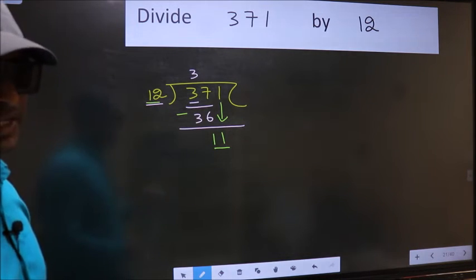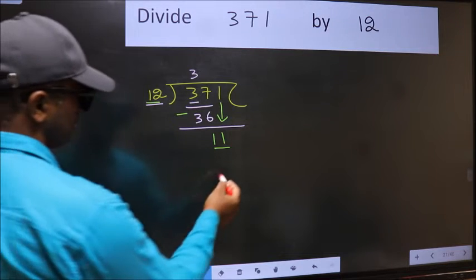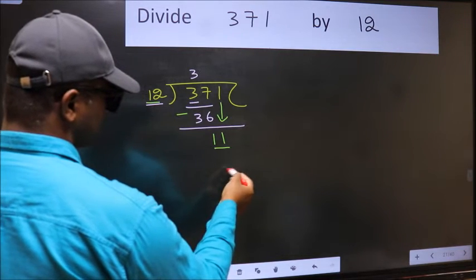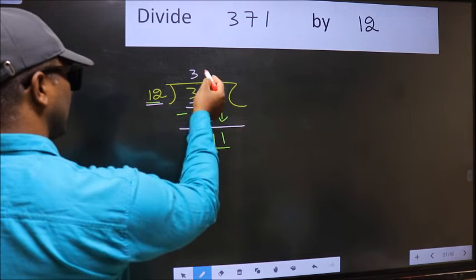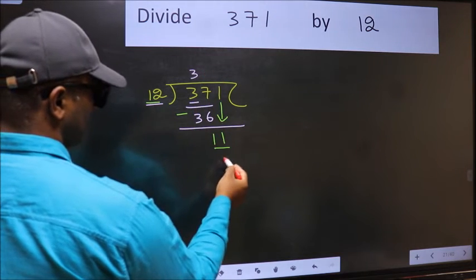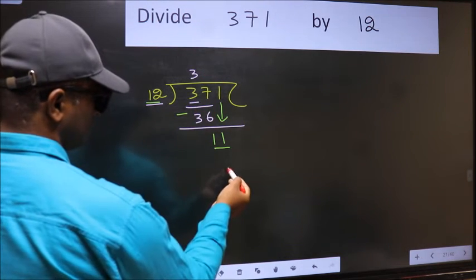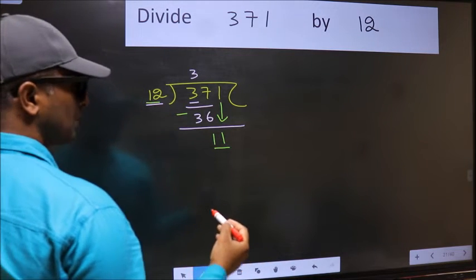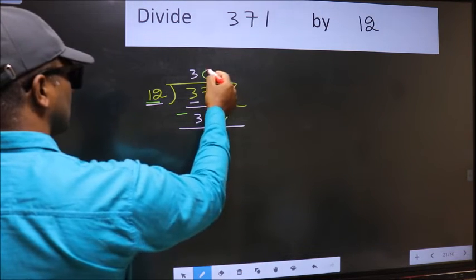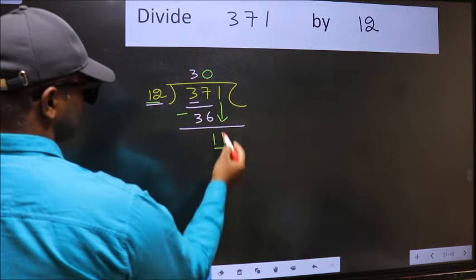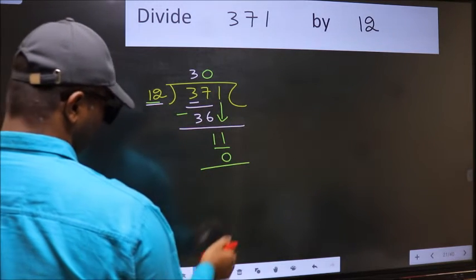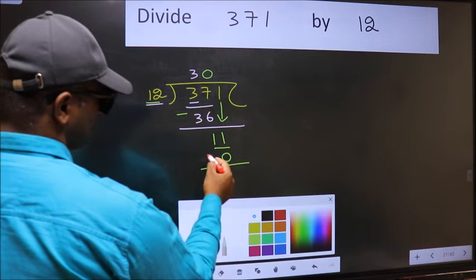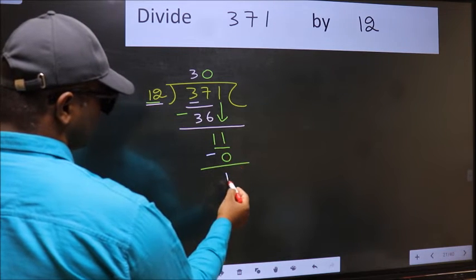If I take 1, we will get 12, but 12 is larger than 11. So what we should do is take 0. 12 into 0 is 0. Now you should subtract: 11 minus 0 is 11.